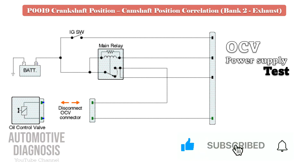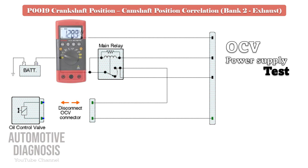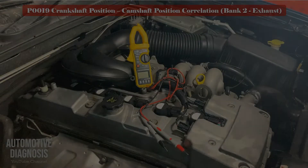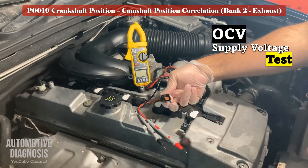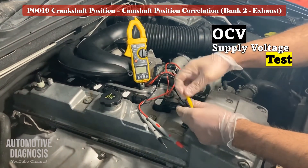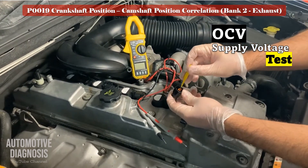For testing the OCV power supply voltage, turn the ignition on when the bank 2 exhaust OCV connector is disconnected. Then check the supply voltage using a multimeter on the relevant pin. In this test, you must measure the battery voltage on the multimeter, as you can see on the left side.